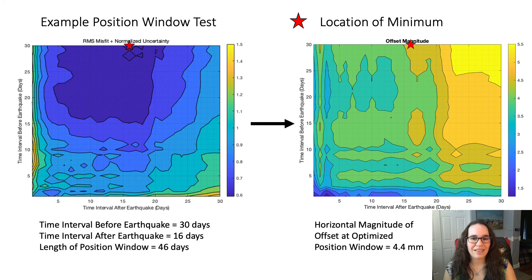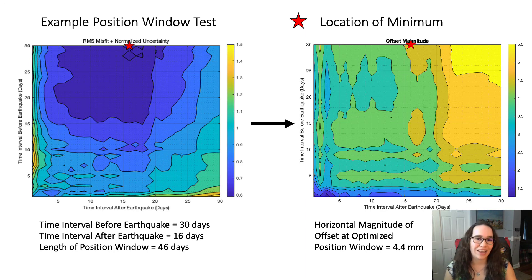The optimal time interval combination is applied to the offset magnitude matrix to find the value of the earthquake offset at a given station for a given event.